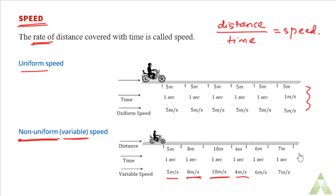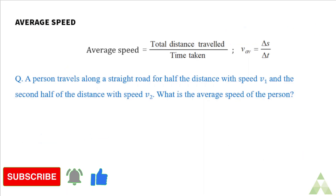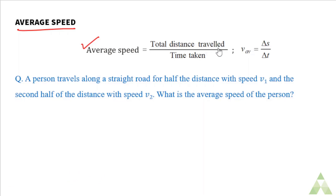When the speed is variable and different intervals of time give different speed values, we say the object has non-uniform speed. Now the average speed is defined as total distance traveled divided by total time taken.